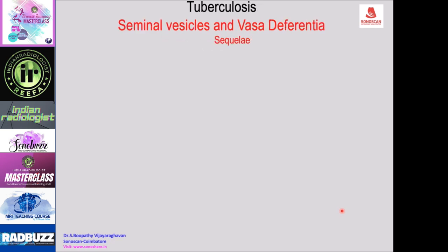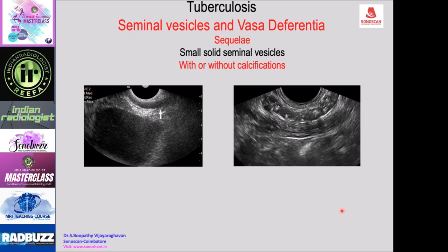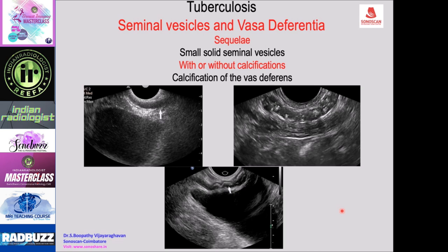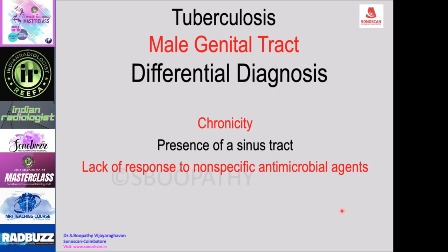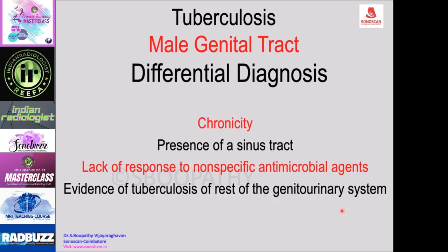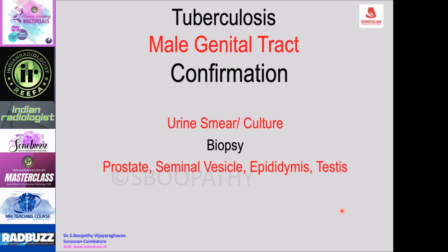Fibrosis and healing of seminal vesicle and vas deferens tuberculosis results in a small solid atrophic seminal vesicle, calcifications in both seminal vesicles, or calcifications in the vas deferens — all non-specific features. Differential diagnosis depends on chronicity of symptoms, presence of a sinus tract, lack of response to non-specific antimicrobials, and evidence of tuberculosis in the genitourinary system. Confirmation is by urine smear and culture or biopsy of the lesion from prostate, seminal vesicle, epididymis, or testis.